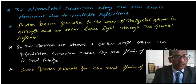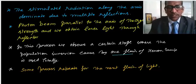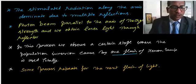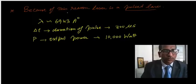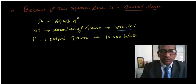Stimulated radiation along the axis dominates due to multiple reflections. Photons parallel to crystal axis grow in strength and we obtain laser light through the partial reflector. This population inversion happens from the first flash of xenon lamp. The same process repeats for the next flash. Because of this, it's a pulse laser. Wavelength is 694.3 angstrom, pulse duration is 300 microseconds, and power is 10,000 watts.